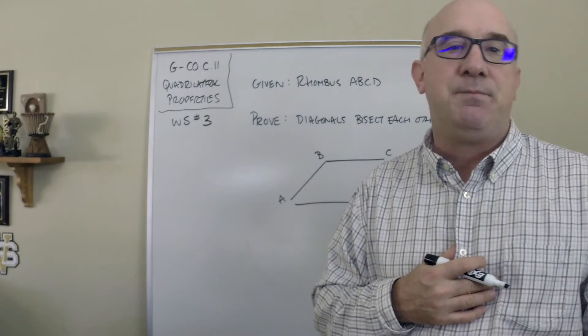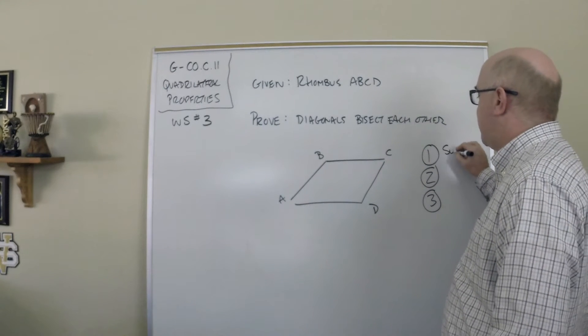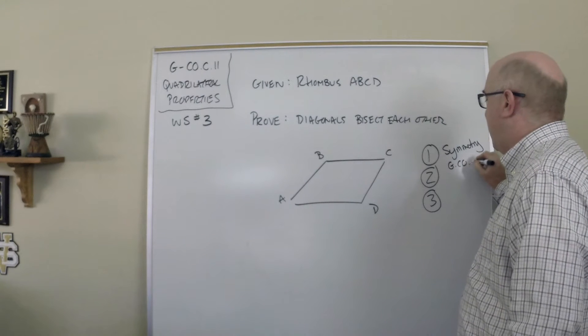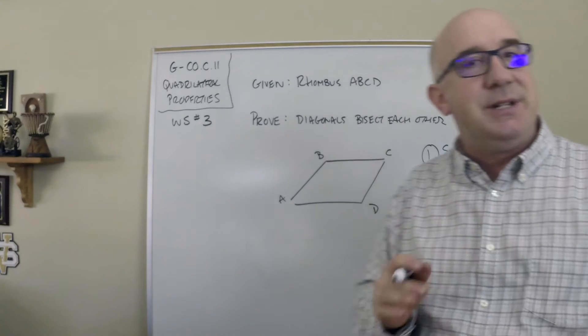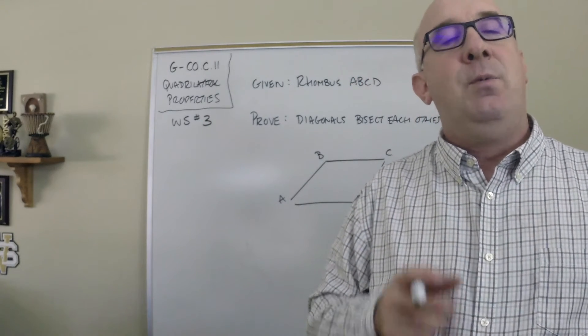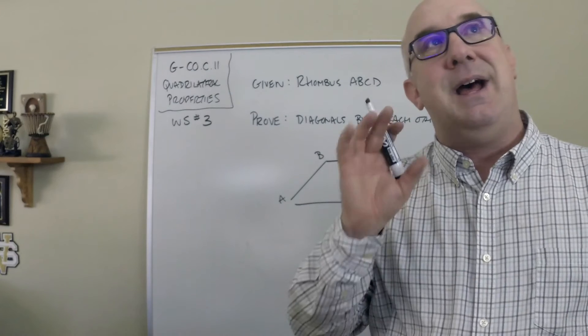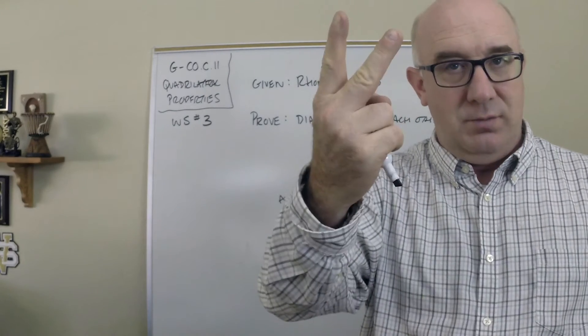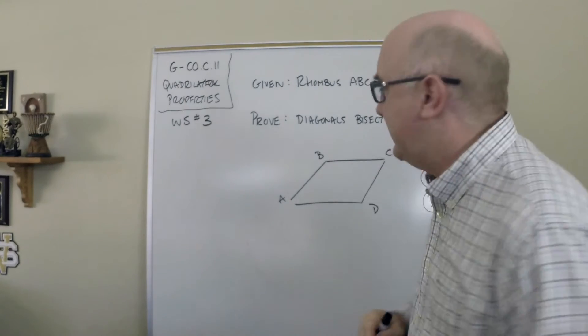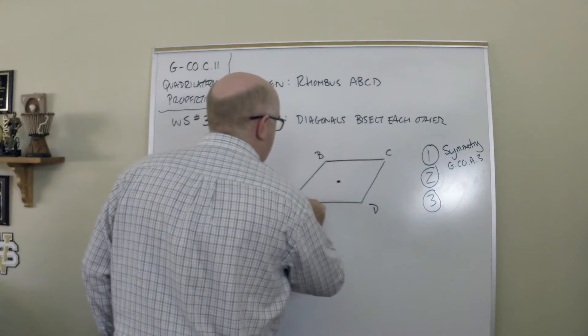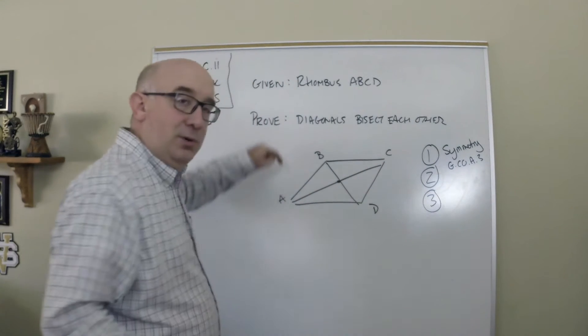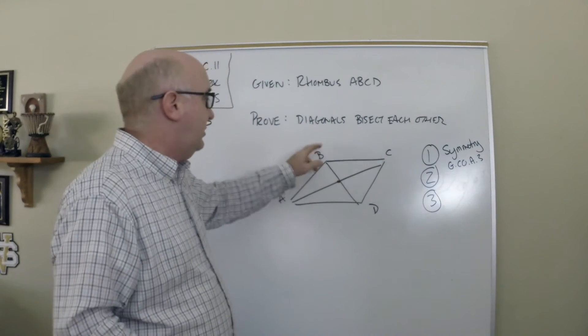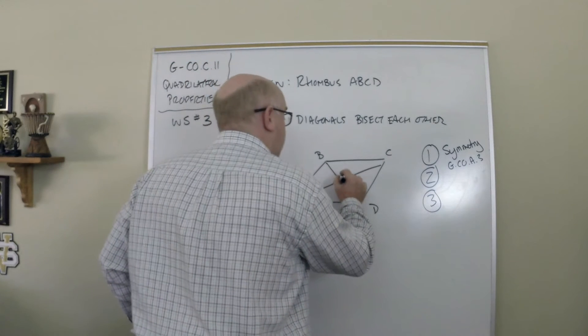Let's give it a shot. The first way I want to prove this one is what I'd call symmetry. In GCO A-3, you and I established the symmetries of the quadrilaterals, and we learned that a rhombus has a rotational symmetry of two. What that means is that if I rotate this rhombus, A will map onto C, D onto B, and so on. Let me put in my diagonals here.